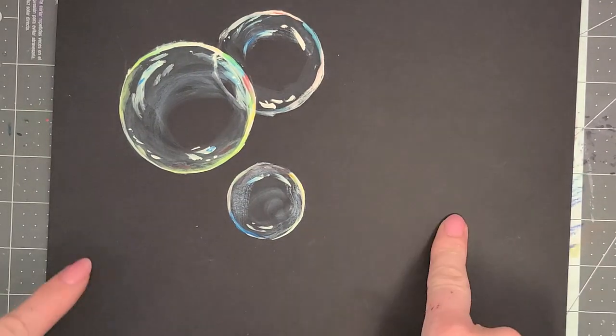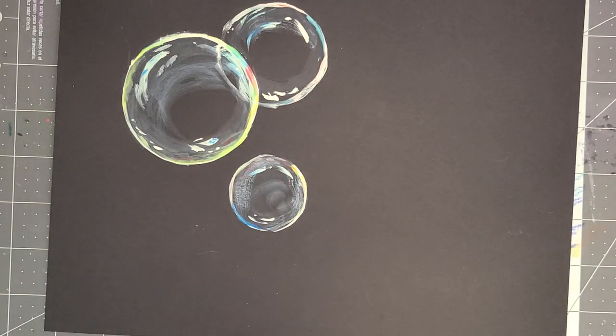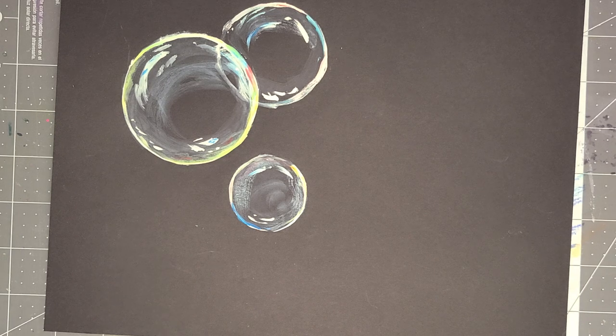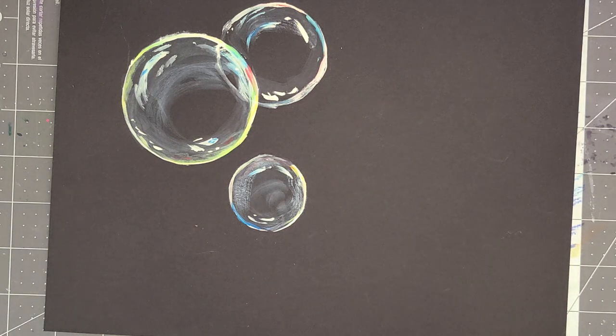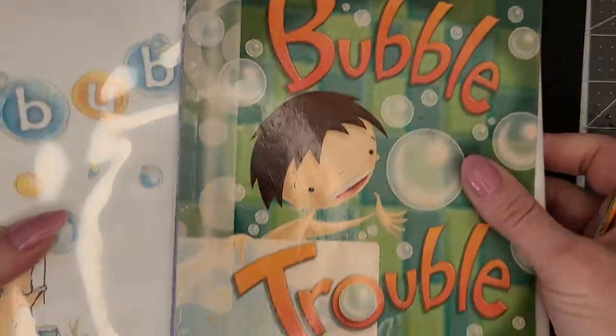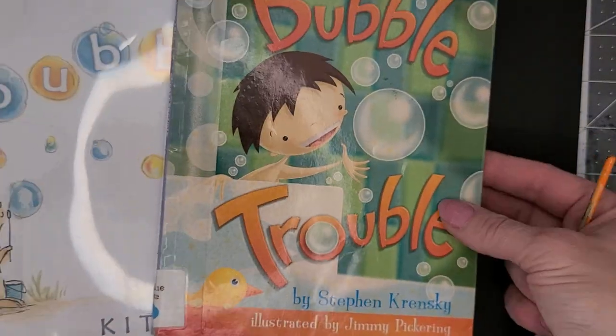Hey everyone, it's Miss Amy from Camden Public Library and it is 70 degrees here in Maine which is crazy in April. So we're going to do an impromptu bubble story time today.